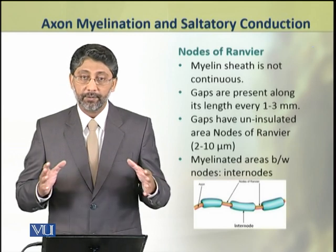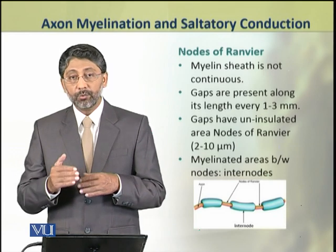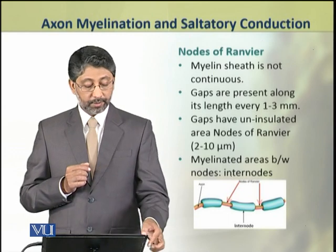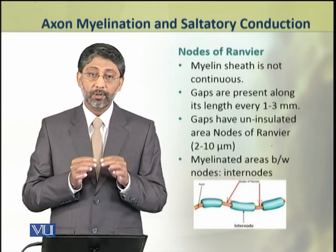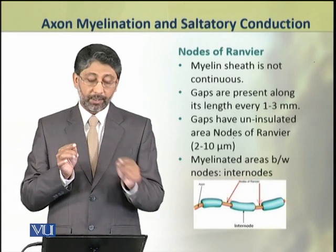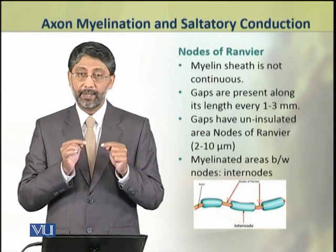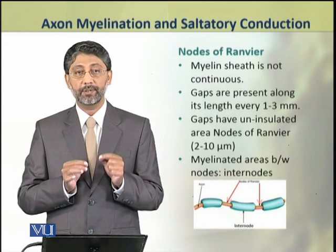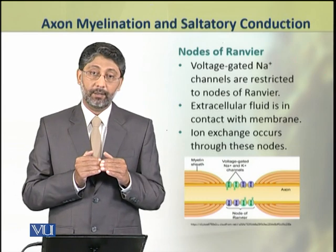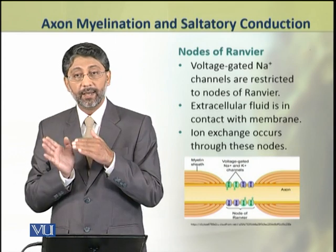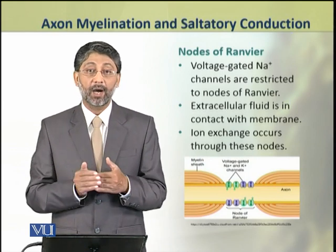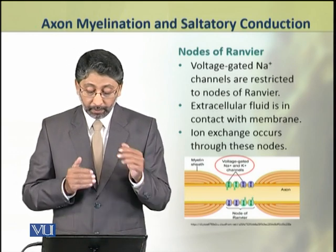Myelin sheath is not a continuous structure. In between the myelinated areas are the nodes of Ranvier. The myelinated regions between the nodes of Ranvier are called internodes. At the nodes of Ranvier, voltage-gated ion channels are present.